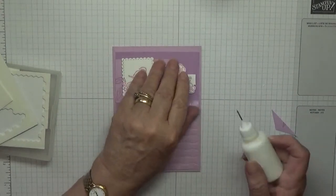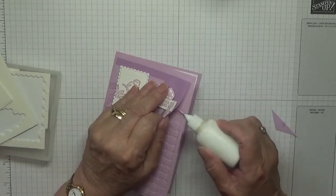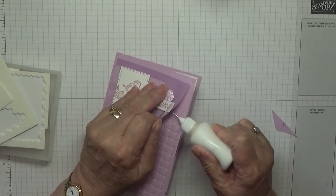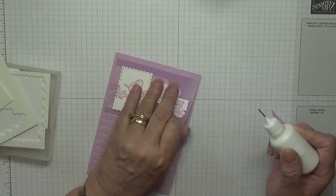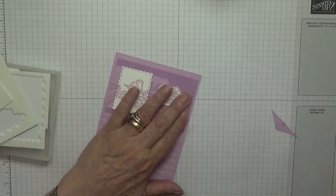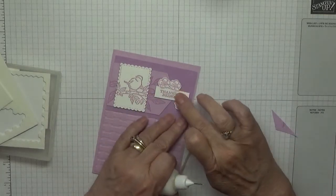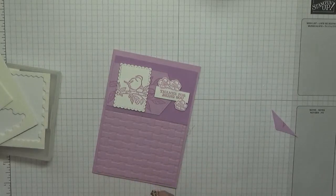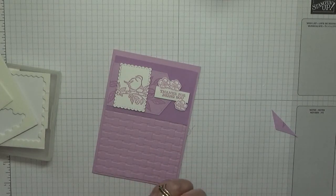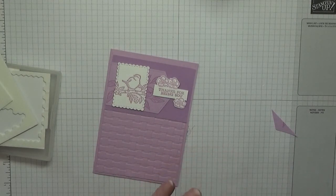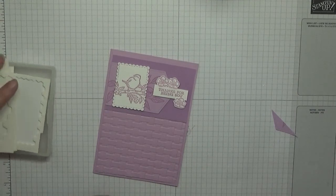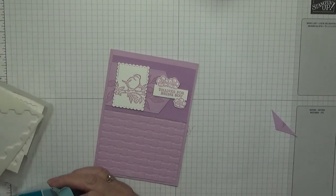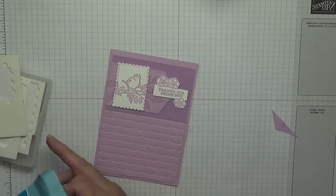Now obviously we've got two flaps here. Now I know where the flower and the sentiment is, I can pop a bit of glue down. But I've also found that if you put a mini glue dot in each corner, because of the texture of the vellum, you can't see them very well.